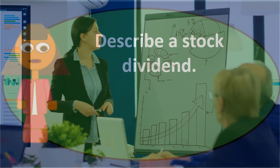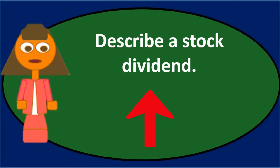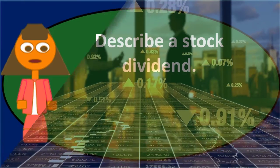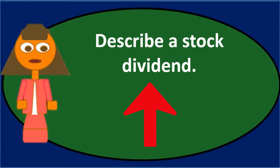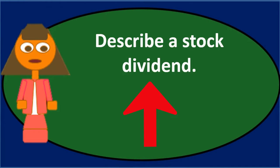Even if you own 51 percent of the shares and have voting power, you can't pressure the company to give you dividends while giving nothing to shareholders who own only one or two shares. Dividends must be distributed proportionally. If a cash dividend is declared, every share receives an equal dividend per share — so if you own 51 percent, you get 51 percent of the total, but each share receives the same amount.